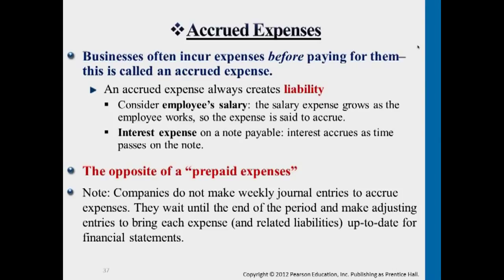The idea here is the opposite of prepayments. With prepayments, you're paying money in advance for a future benefit — giving away cash early. With accrued expenses, you've already received the benefit, such as an employee working for you or using borrowed money, but you haven't yet paid the cash. So this is the opposite of prepayments: you wait until after using resources or receiving benefits, then make the cash payment.